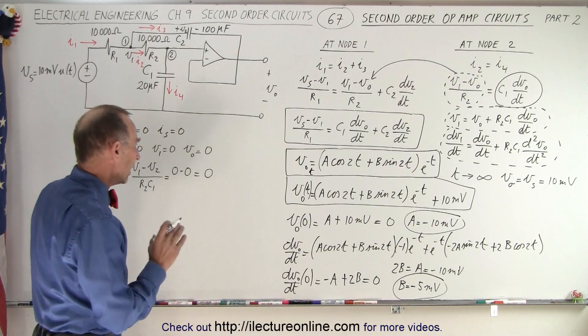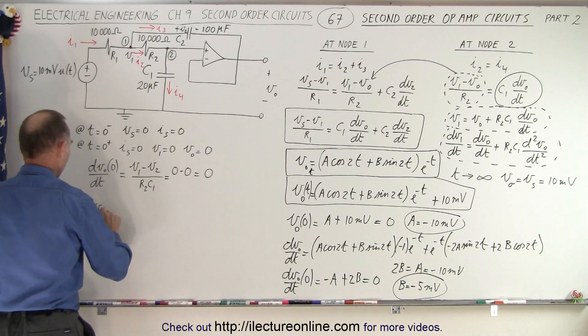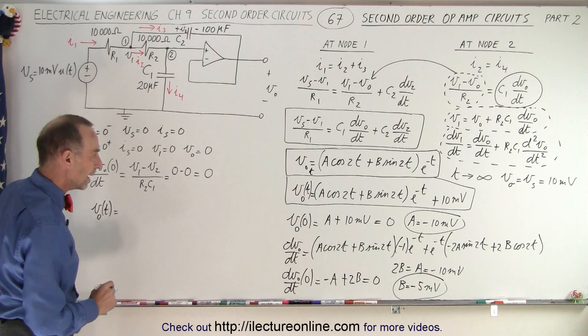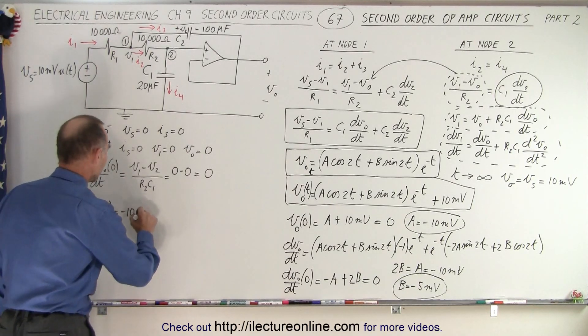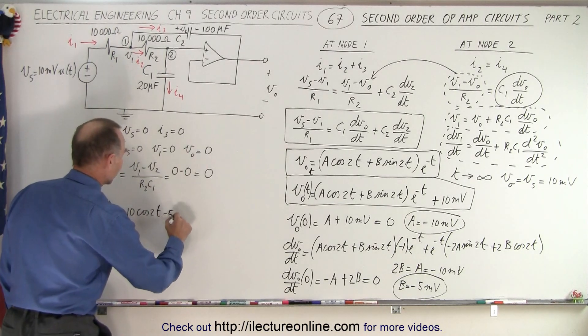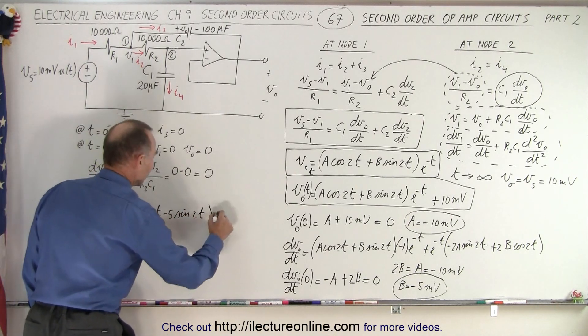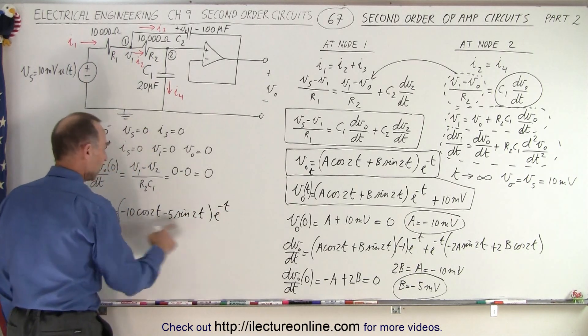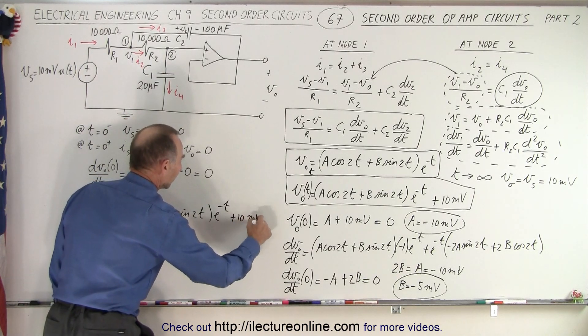Now we're ready to plug that into the equation, and so now we can say that the voltage, the output voltage as a function of time, is equal to A, which is minus 10, times the cosine of 2t, plus B, which is a minus 5, times the sine of 2t, all multiplied times e to the minus t, and then we still have the steady state of 10 millivolts.